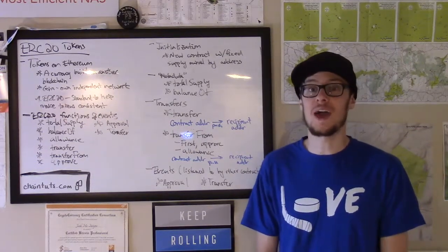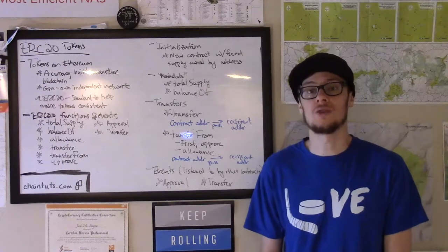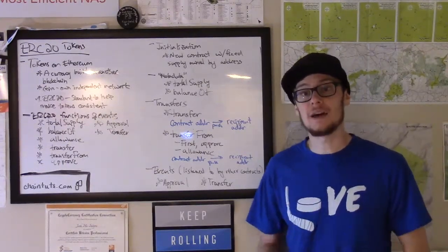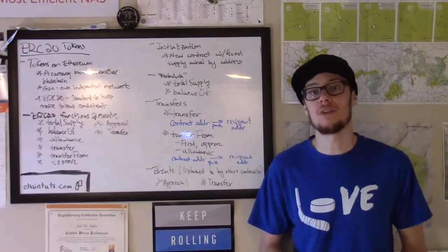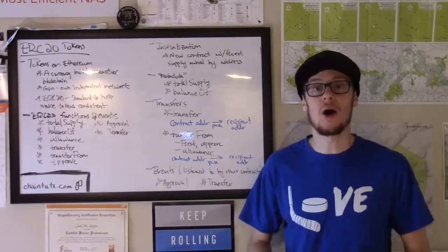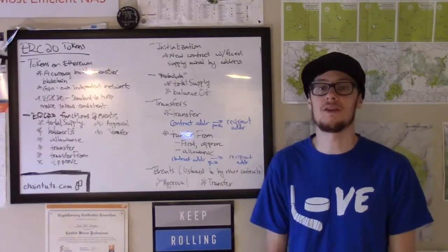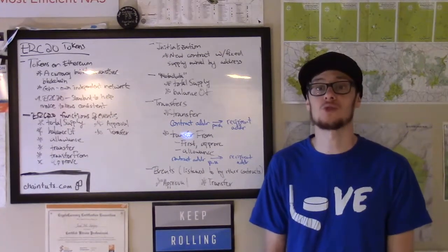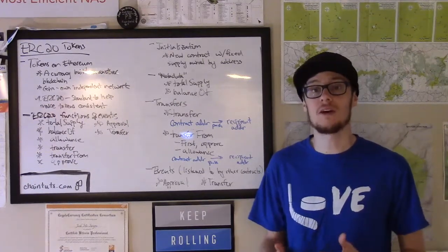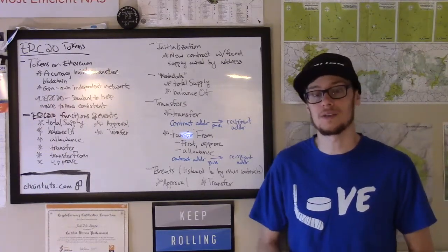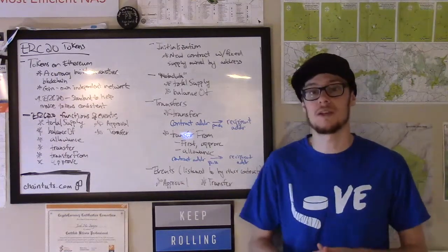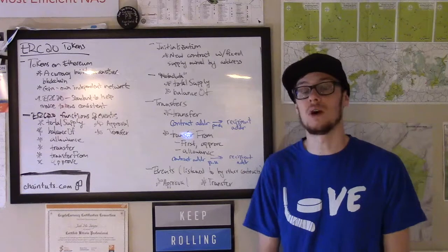So this has been a look at how ERC20 standard tokens work from a technical perspective, but it's a pretty high level overview of how these tokens work. I think that there's a lot going on when it comes to understanding Ethereum smart contracts and how this code executes on this decentralized network. But I think that understanding standard tokens is a good place to start because at a high level, when you look at these functions and events, I think they're fairly intuitive to understand.